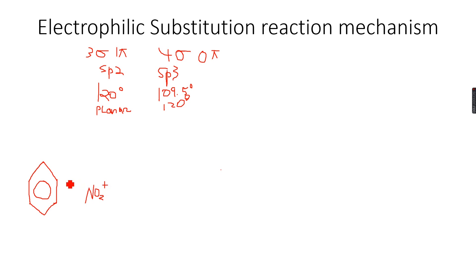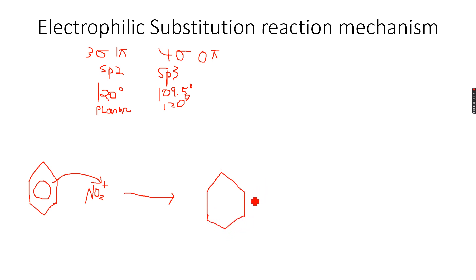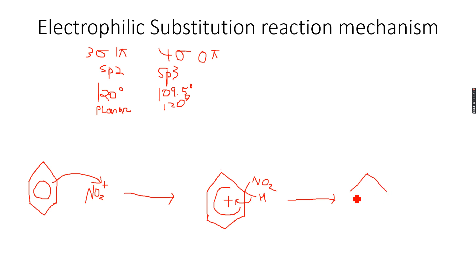We have our NO2+ ion and movement of electron pairs from benzene to this — a curly arrow over here. Then we get our intermediate: we draw the structure of benzene first, then the H with the NO2 attached, with a broken circle inside and a plus charge. To neutralize this plus charge, these electrons move over here and we get our stable benzene molecule back — the circle is complete — with NO2 attached.